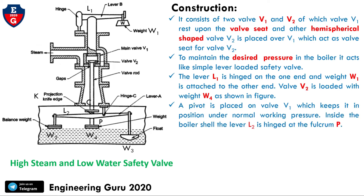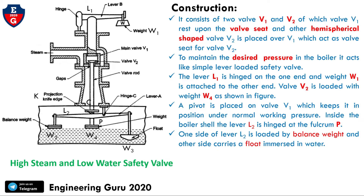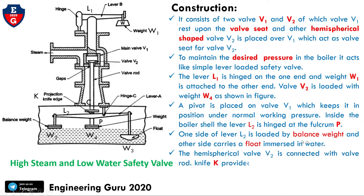A pivot is placed on valve V1 which keeps it in position at normal working pressure inside the boiler shell. The lever L2 is hinged at the fulcrum point P. One side of lever L2 is loaded by the balance weight W2, and the other side carries a float W3 immersed in the water.